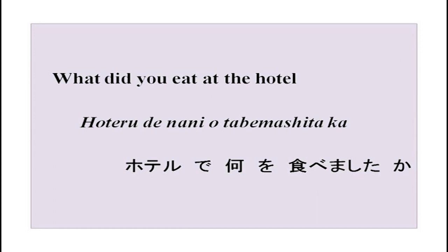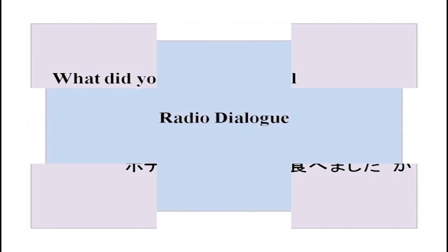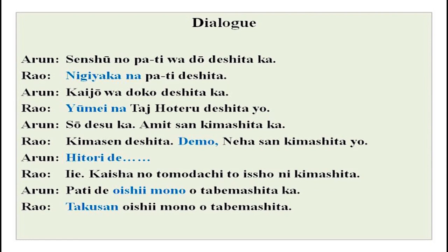We have done i-adjectives in our last lesson. Today we will do na adjectives. The example sentence is: 'Hotel de nani wo tabemashita ka?' — what did you eat at the hotel? Now listen to this audio dialogue between Arun-san and Rao-san, and let us see how much you understand. I will read the dialogue and then explain.